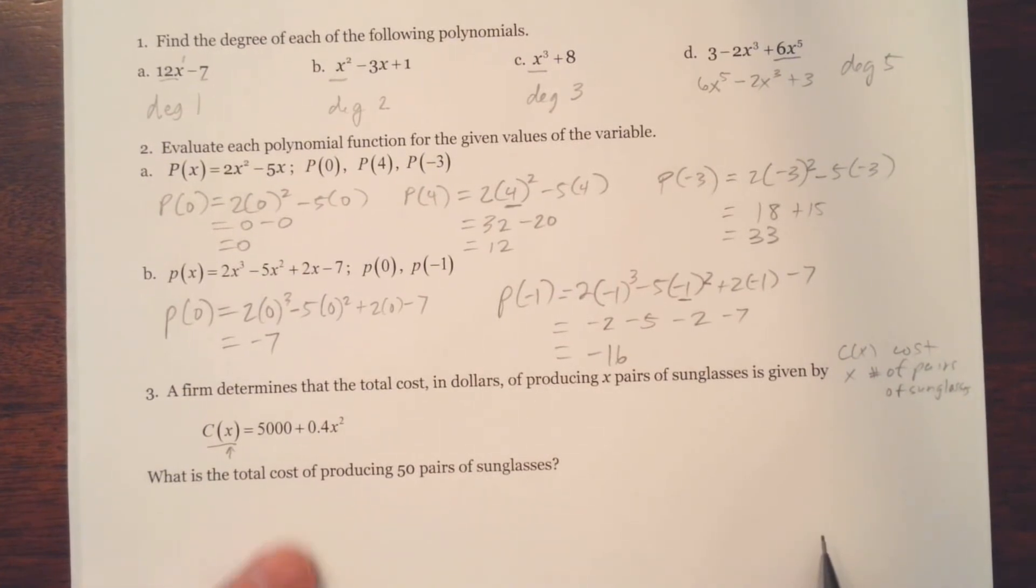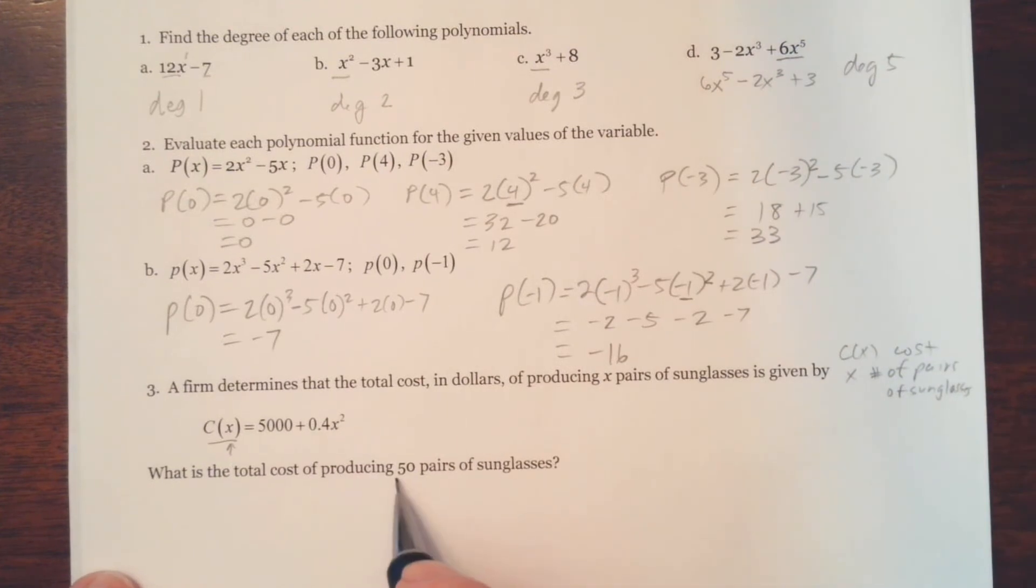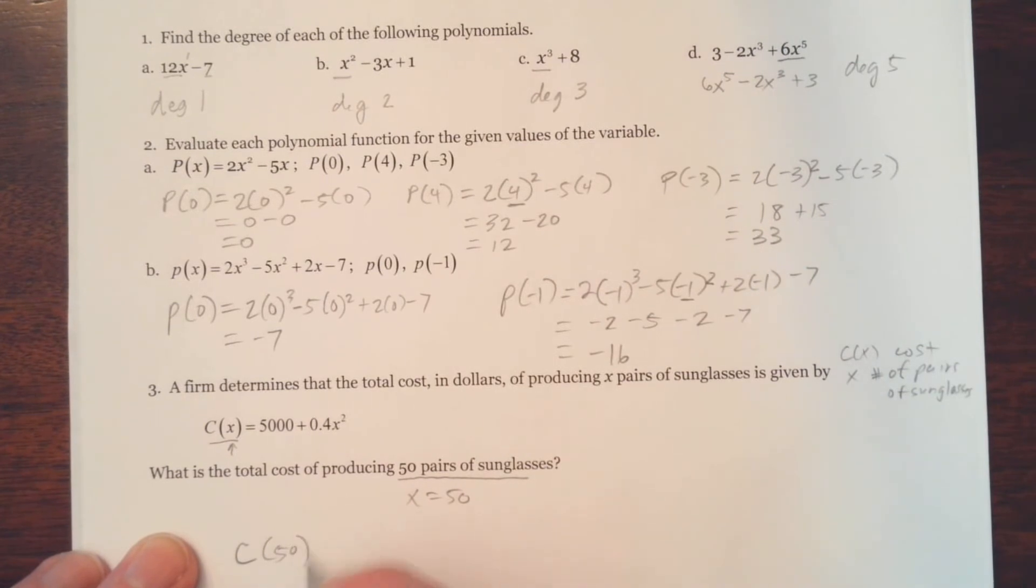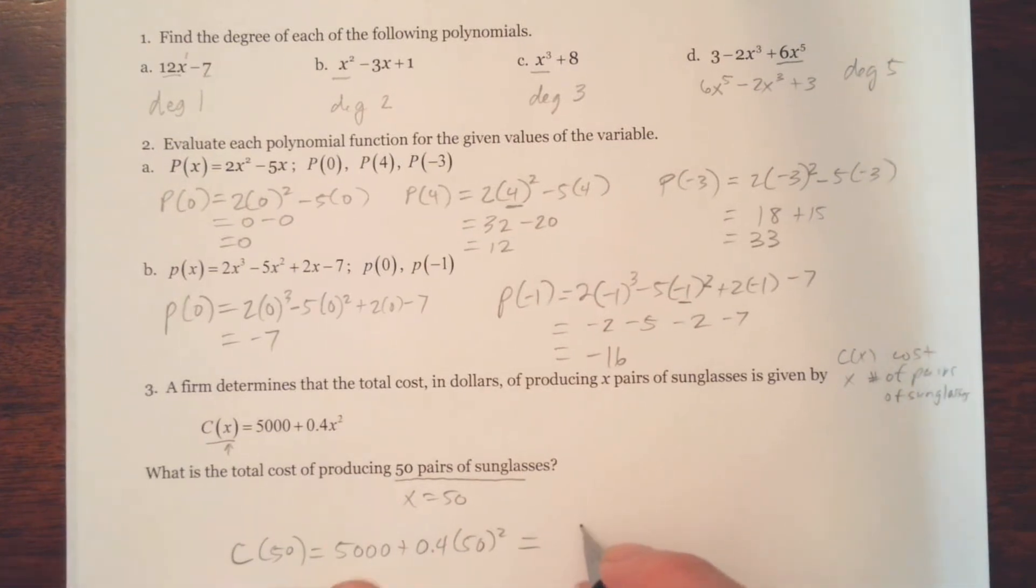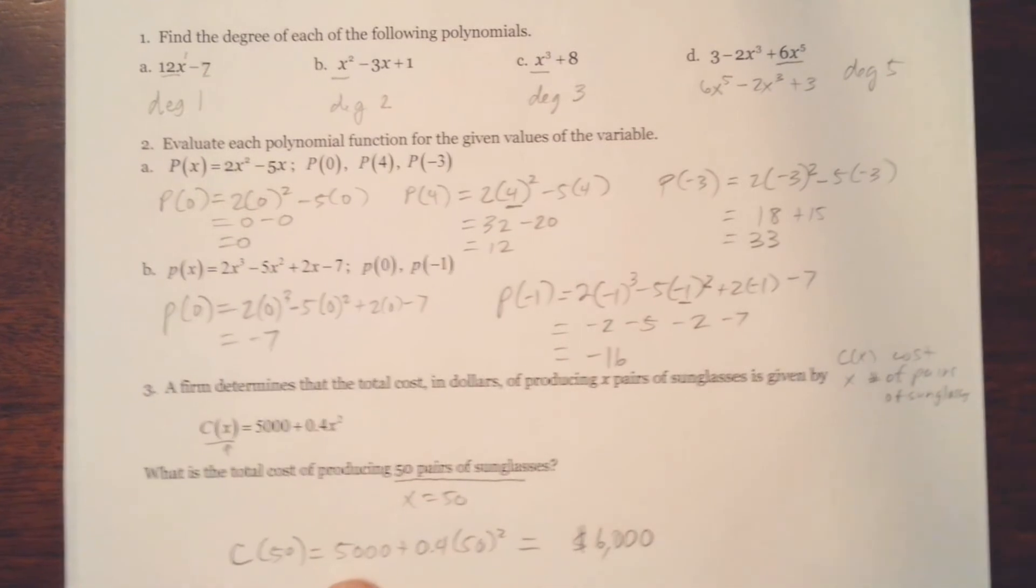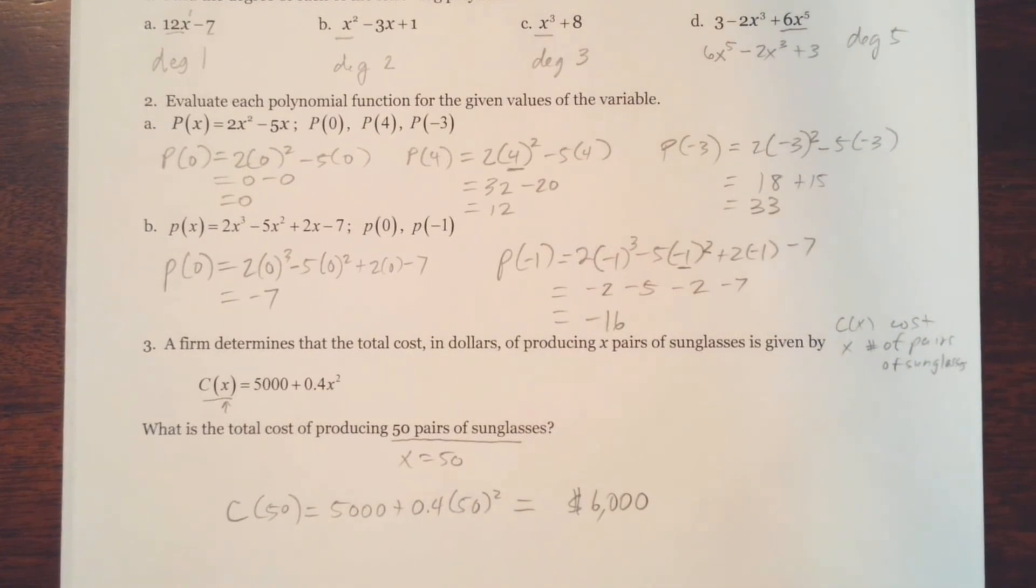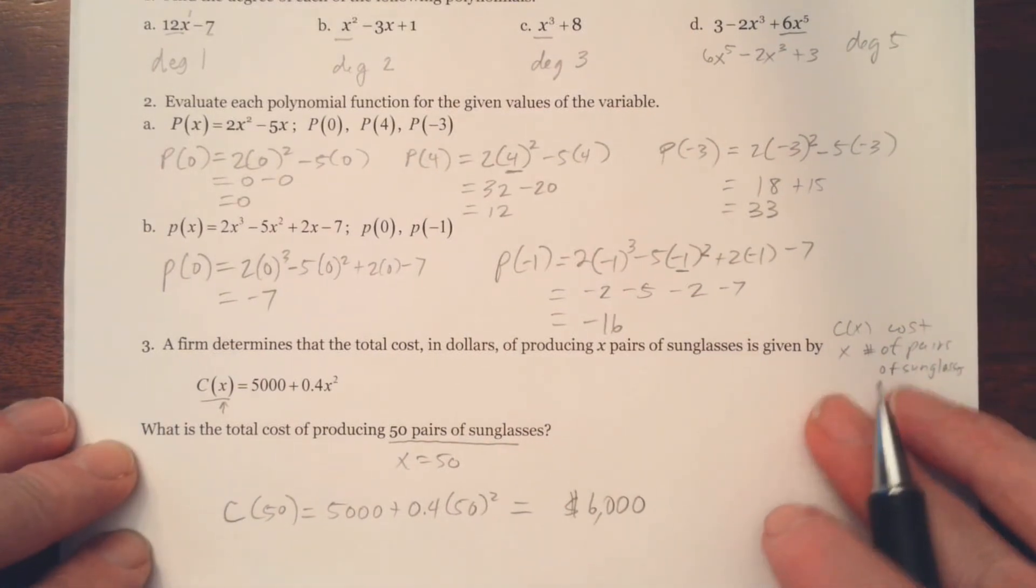Alright, so it says what is the total cost of producing 50 pairs of sunglasses? Well, that's telling us our x value here. It's 50, and we're looking for the cost, that's c of x. In this case, our input is 50. So we're just finding c of 50, which is the cost when we produce 50 pairs of sunglasses. So it'll be 5,000 plus 0.4 times 50 squared. And when you plug that into your calculator, you should get $6,000. Now notice, that's how much it costs you to produce 50 pairs of sunglasses. If you divided 6,000 by 50, that would actually tell you the cost of each pair, at least what your cost of producing that pair of sunglasses. And obviously, you would want to sell it for a lot more than that.